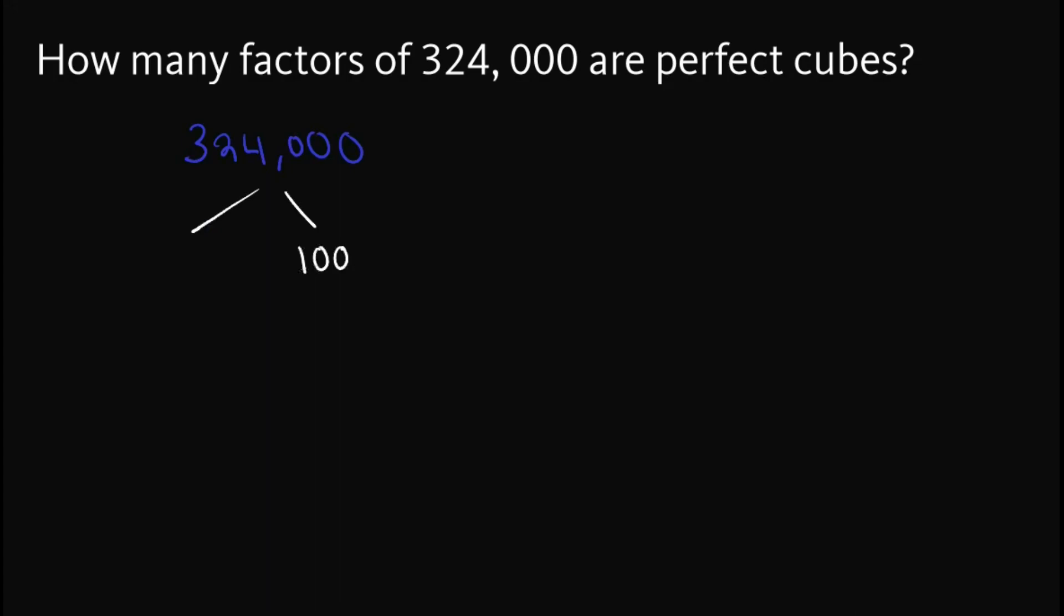So we've got 1,000 and 324. For 324, we can verify that 18 squared is actually equal to 324. So we can write this one as 18 and 18.